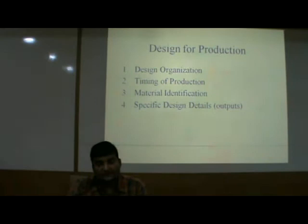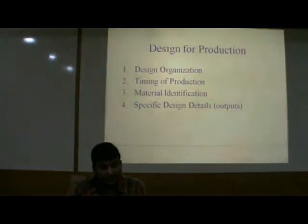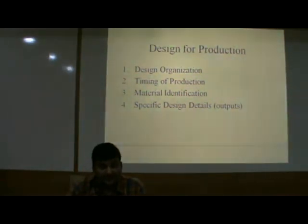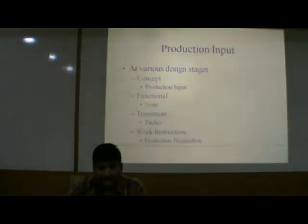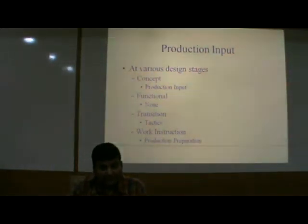Now we will discuss design for production. The basic parts of design for production are: design organization, timing of production, material identification, and specific design details — these are outputs. For production input at various design stages: concept, production input, functional, transition, tactics, work instructions, and production preparation.